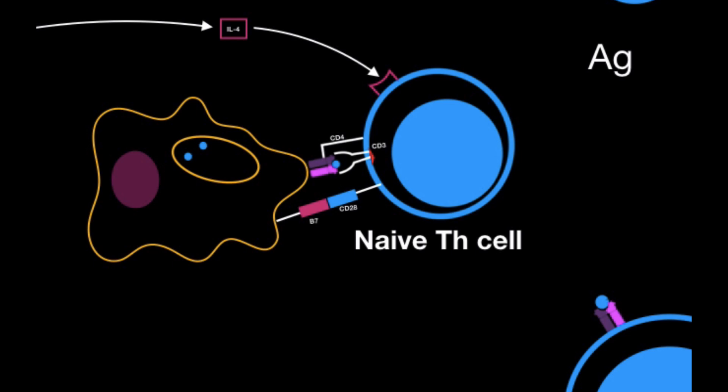Now, after it has received interleukin-4, it will then start to secrete out interleukin-2, which will bind to its own receptor. That's also called an autocrine function. The interleukin-2 is going to help the naive T helper cell to grow and proliferate and differentiate into an active T helper cell 2.